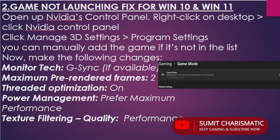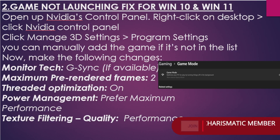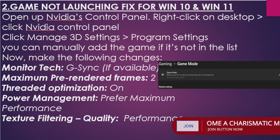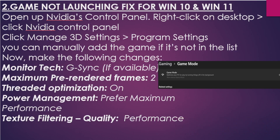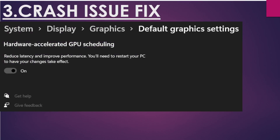In the NVIDIA Control Panel, under 3D Settings and Program Settings, manually add God of War and apply the following settings: enable G-Sync if available, set Maximum Pre-Rendered Frames to 2, set Threaded Optimization to On, set Power Management to Prefer Maximum Performance, and set Texture Filtering Quality to Performance. These settings can increase game performance and help prevent launch issues.